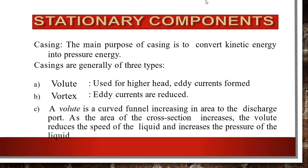The main purpose of the casing is to convert kinetic energy into pressure energy. Casings are of three types. The first is volute, used for higher head where eddy currents are formed. The second is vortex, where eddy currents are reduced. The third also involves a volute — a curved funnel increasing in area toward the discharge port. As cross-sectional area increases, the volute reduces liquid speed and increases liquid pressure.